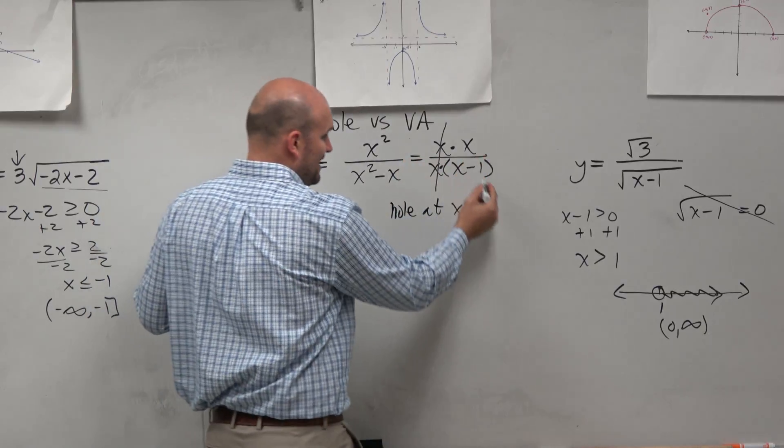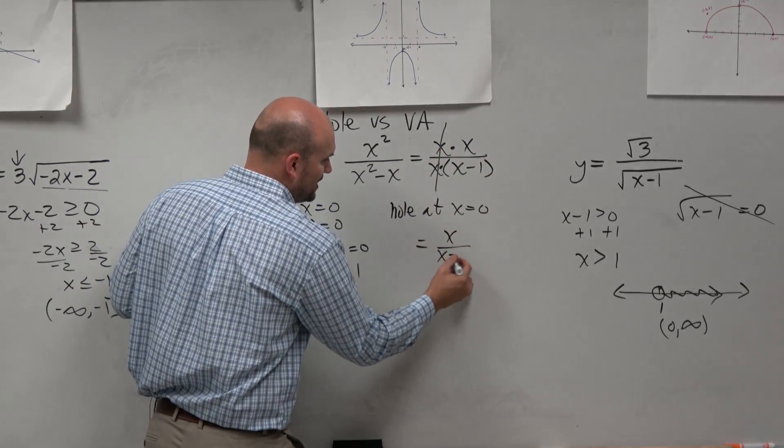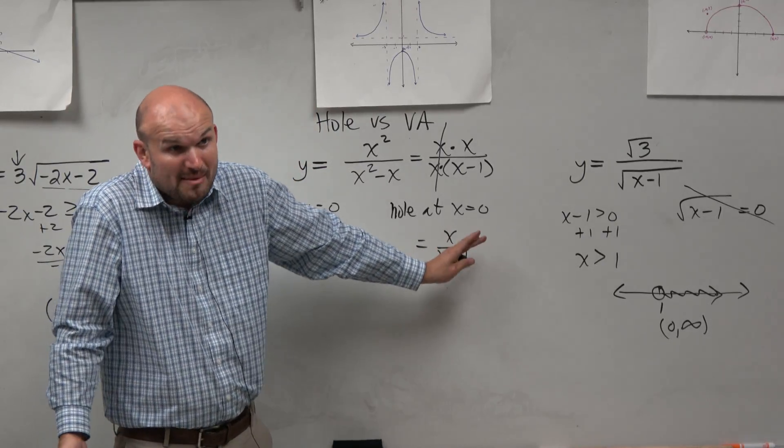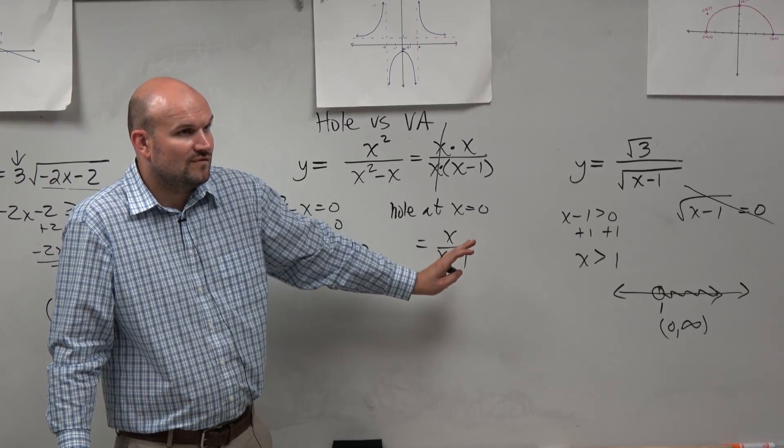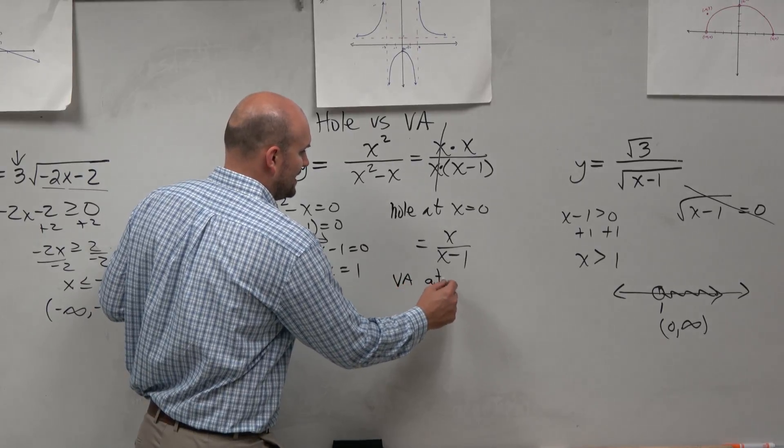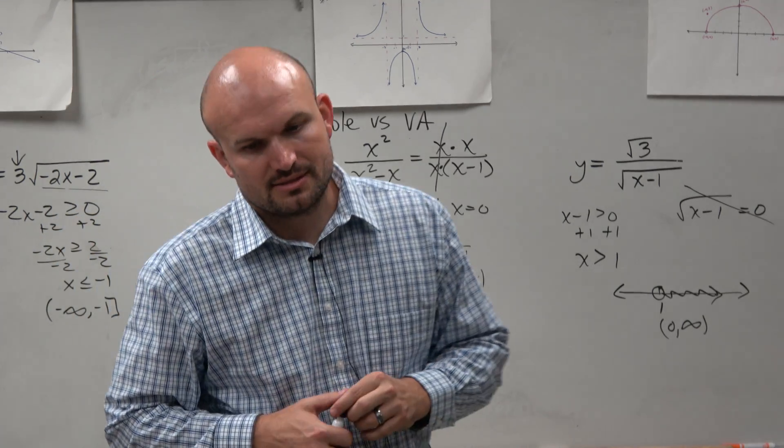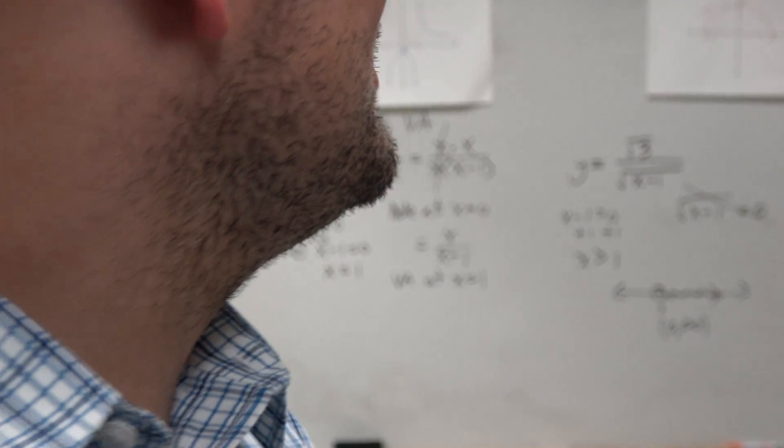Now, when I simplify this, so that gets divided out, so I'm left with x over x minus one. Do you guys see how the discontinuity x minus one never got divided out? It remained, right? So therefore, it is a vertical asymptote. So we can say there's a vertical asymptote at x equals one. All right? So why don't you guys go ahead and see that.